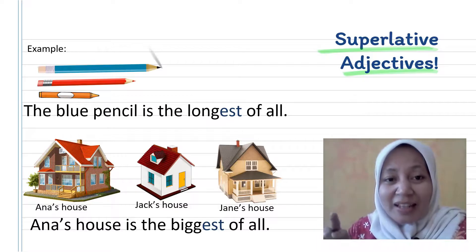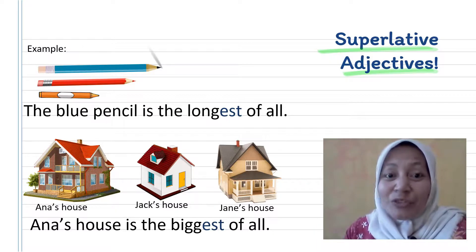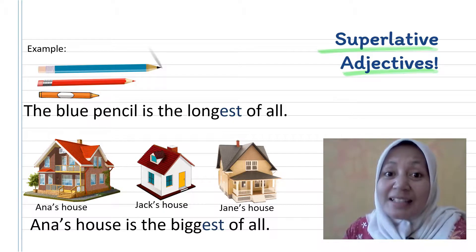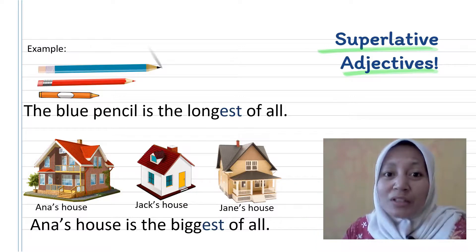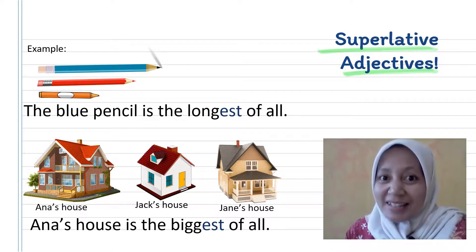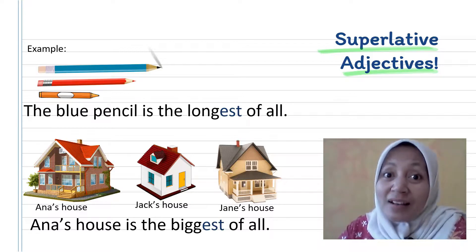Now the second example. I have three houses: Anna's house, Jack's house, and Jane's house. We will use the word 'big' — one syllable, short word — so just add -est. The sentence is: 'Anna's house is the biggest of all.'